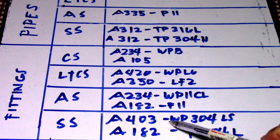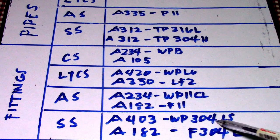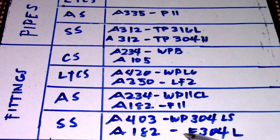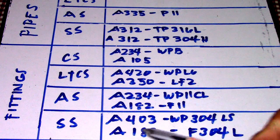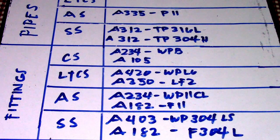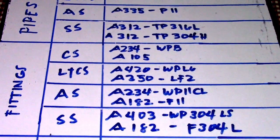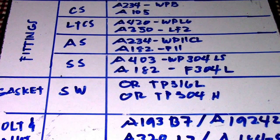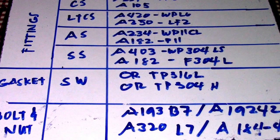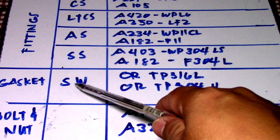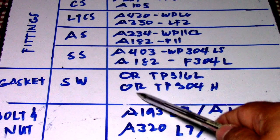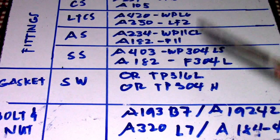For stainless steel fittings, the ASTM code is A403 WP304L, and A182 F304L. Next we have gaskets, bolts, and nuts. For gaskets, we have SW (spiral wound) type with OR (outer ring) Type 316L and OR Type 304H for the ASTM code. We also have CR (center ring) and IR (inner ring) types.